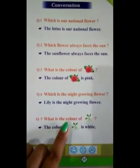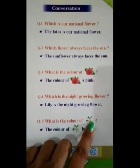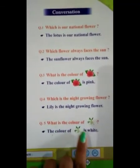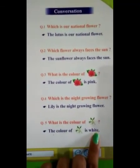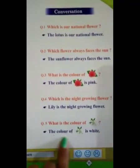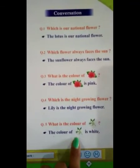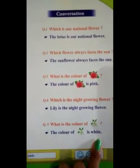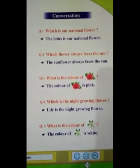What is the color of jasmine? The color of jasmine is white. The color of jasmine is white. Okay, everyone!